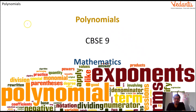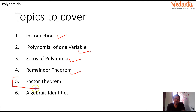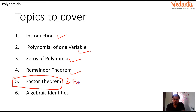So in polynomials, we have seen the introduction, polynomials in one variable, zeroes of the polynomial, remainder theorem, and factor theorem. Till the remainder theorem we had already covered in the last session. Today we are going to discuss the factor theorem, and also a little bit of factorization of polynomials.